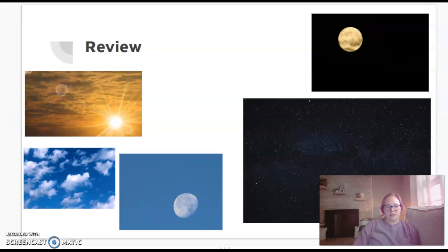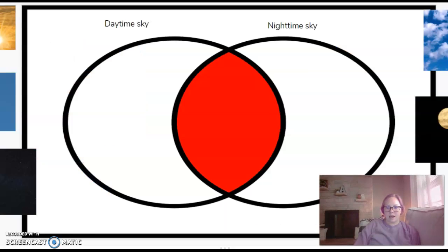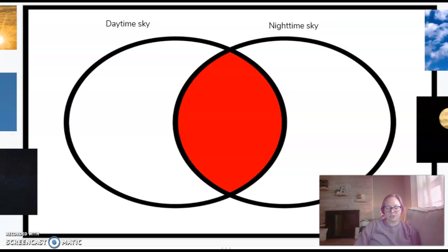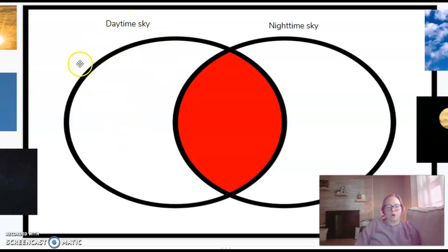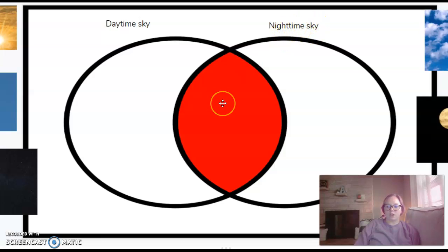What we're going to do today is learn about something called a Venn diagram. A Venn diagram can help us see things that are unique and things that are the same. Over here in this circle it says daytime sky — we're going to put all the pictures of things that belong in the daytime sky. Over here in this white circle we're going to put things that belong in the nighttime sky. And in the middle we're going to put things that go in both. I have some pictures on my screen and we're going to sort them and put them where they belong.